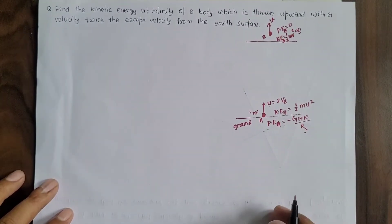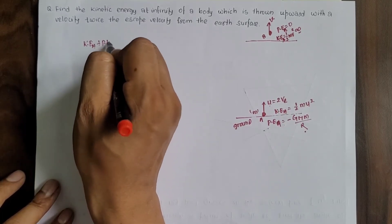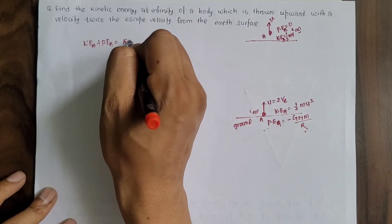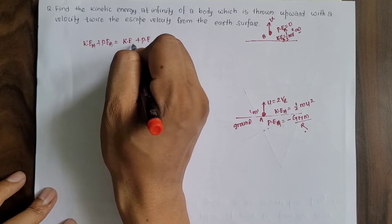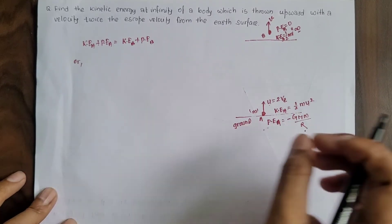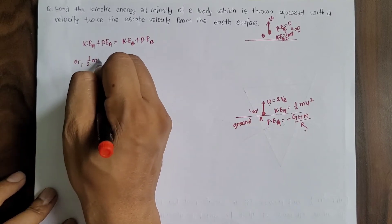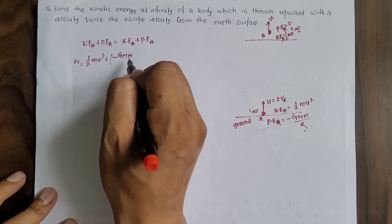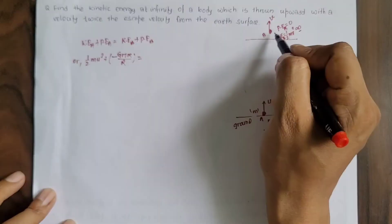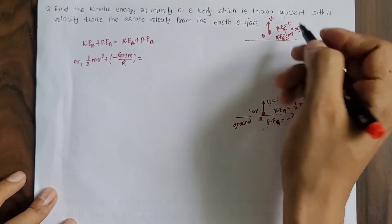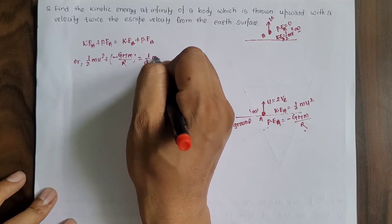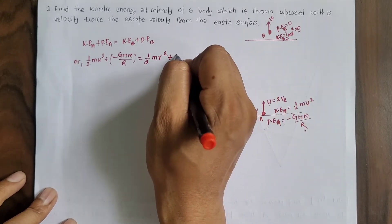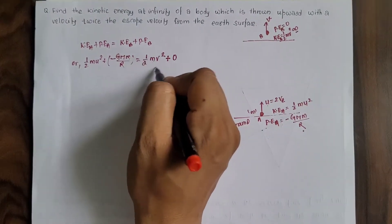From the conservation of mechanical energy: kinetic energy plus potential energy at point A equals kinetic energy plus potential energy at point B. So: ½mu² + (-GMm/r) = ½mv_b² + 0, since the potential energy at infinity is always zero.